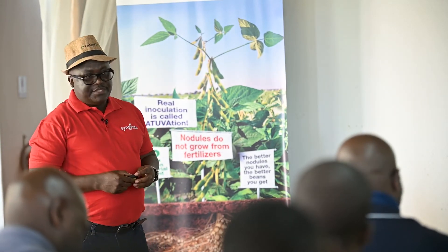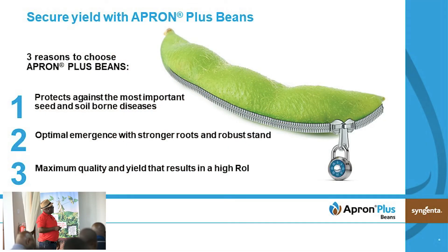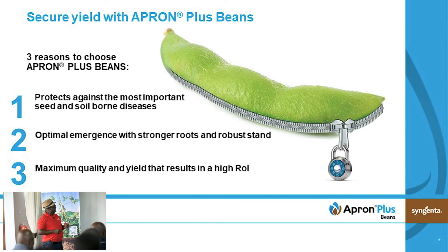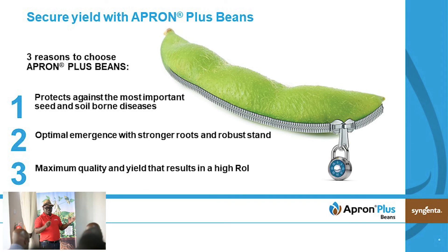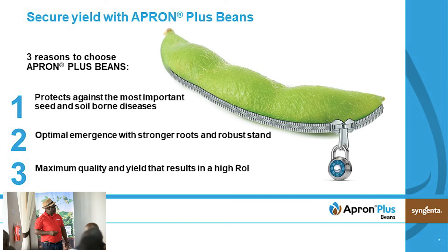In conclusion, we are saying you secure your yields and your income if you use Apron Plus Beans, for three reasons. First, it protects against some of the most important seed and soil-borne fungal diseases. Second, there is optimal emergence with stronger roots and robust stand growth — we saw from the results that there was optimal emergence on the plot where Apron Plus Beans was used, stronger roots, higher root biomass, and vigorous plant growth. All these are parameters that help determine yield.